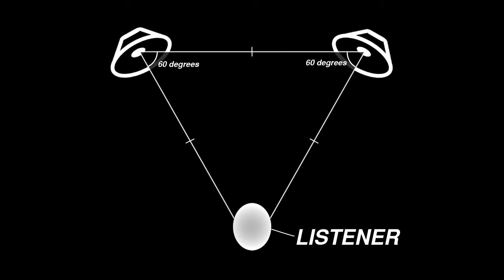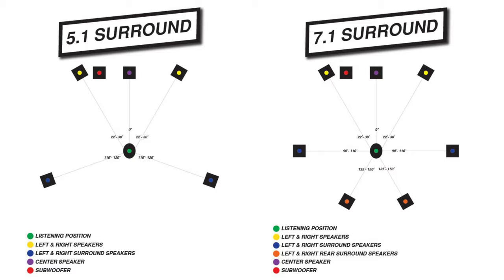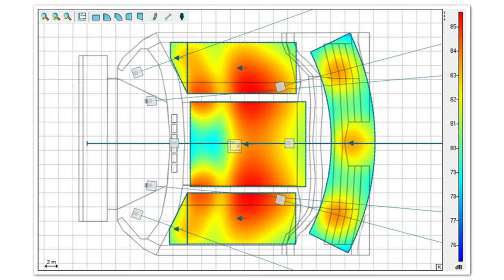Where will the audience be located? I think this question is the best place to start. Is this a listening system for one person, 50 people, or a thousand people? If there's only one listening position, you know where the listener will be at all times, and you can optimize the system to sound best at that exact position, maybe even employing a stereo or surround setup to make the experience more immersive. When designing a sound system for a larger audience, just providing even coverage can be a challenge. A sound system can really only be optimized for one point in space, so you'll have to make some sacrifices when optimizing for a larger audience area.